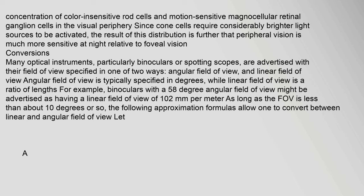In comparison, there is a higher concentration of color-insensitive rod cells and motion-sensitive magnocellular retinal ganglion cells in the visual periphery. Since cone cells require considerably brighter light sources to be activated, the result of this distribution is further that peripheral vision is much more sensitive at night relative to foveal vision.